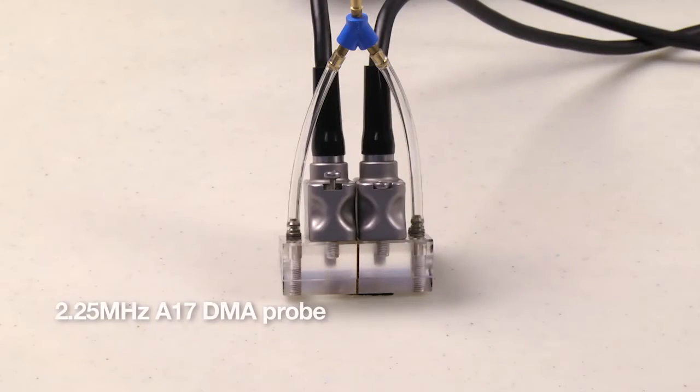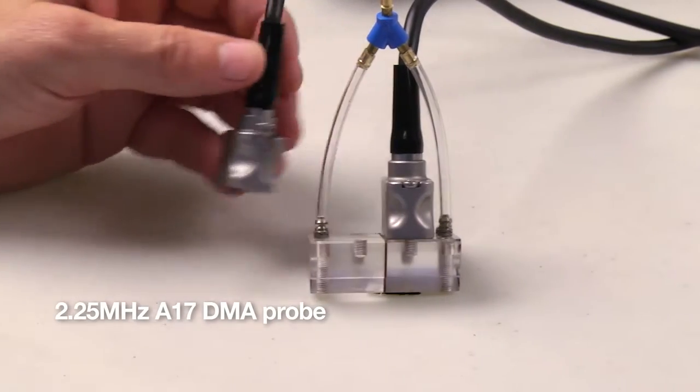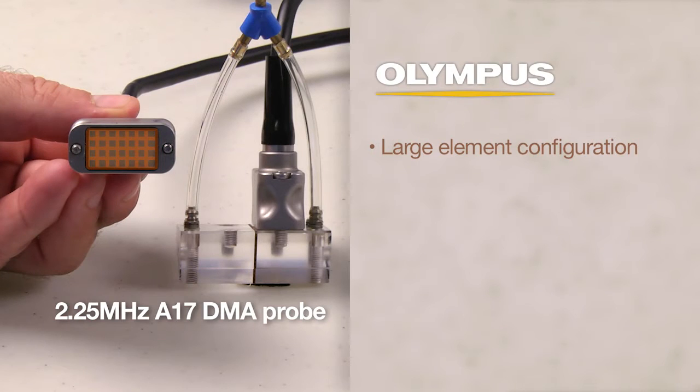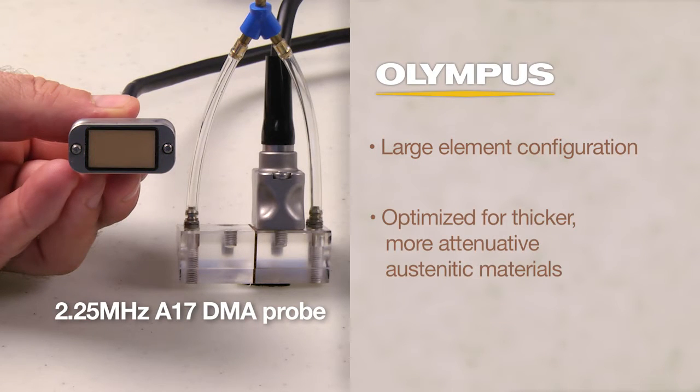The Olympus 2.25 MHz A17 DMA probe contains a 4 by 7 large element configuration in each housing, optimized for thicker and more attenuative austenitic materials.